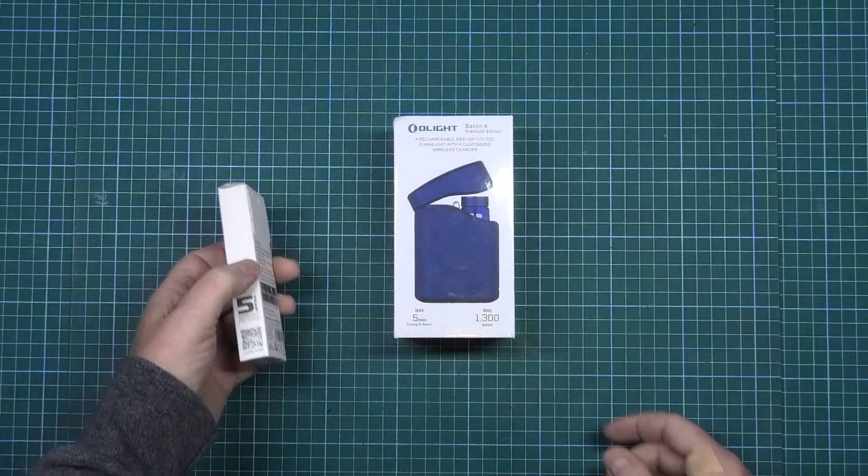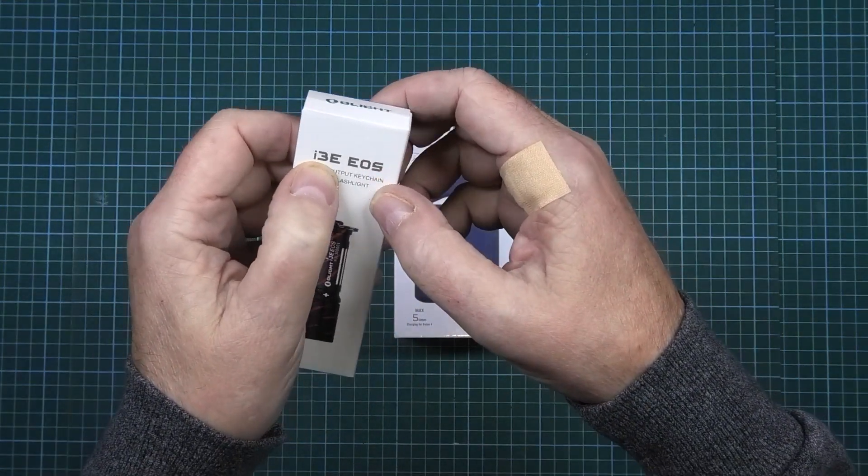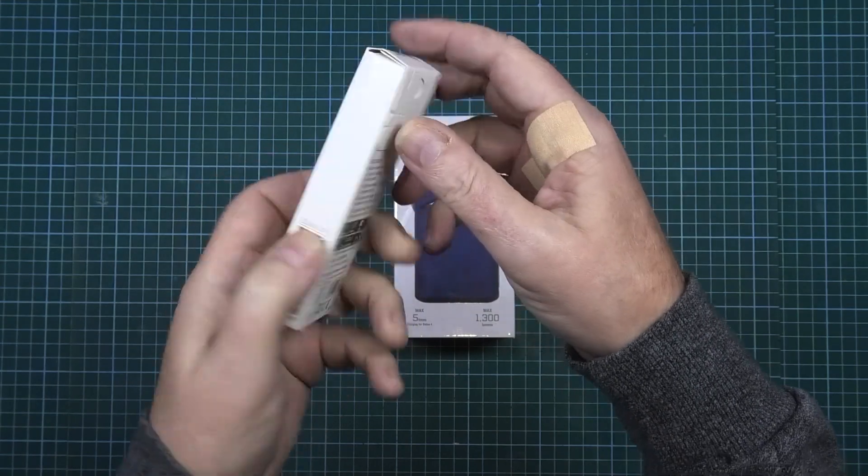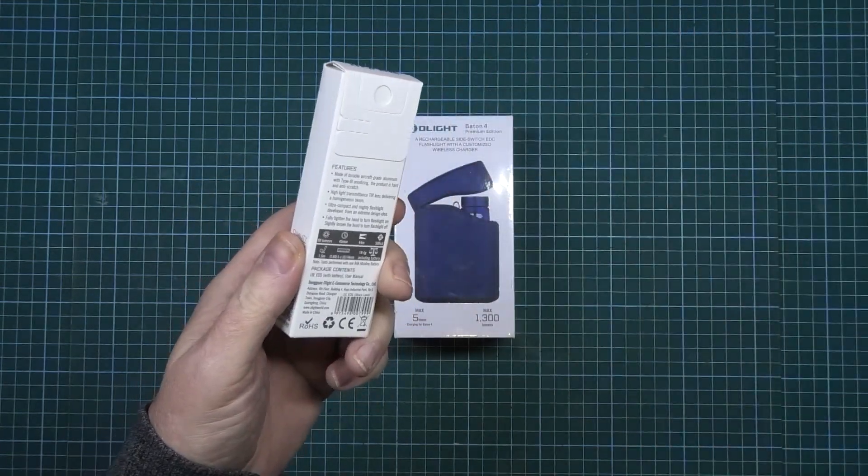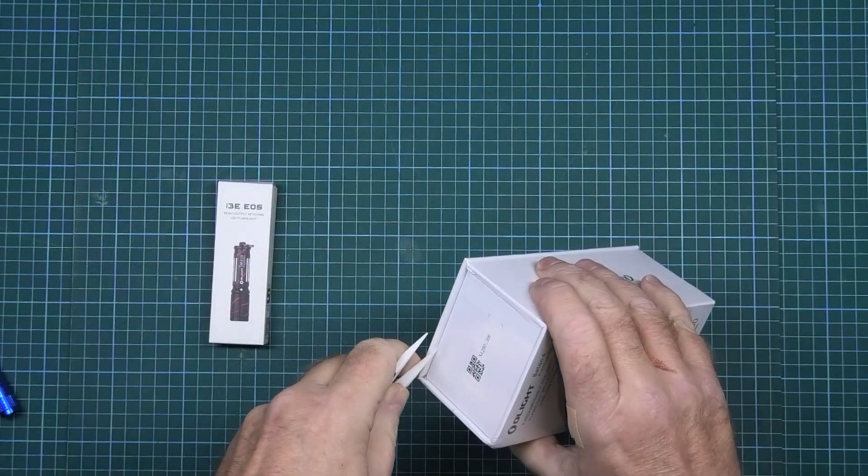This is the Olight Batten 4 premium edition and also the i3e EOS. Is it the same as that one? How do we get in here?